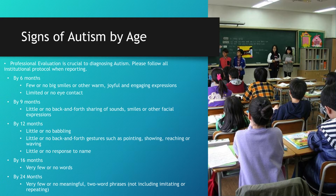By 6 months: few or no big smiles or other warm, joyful, and engaging expressions; limited or no eye contact. By 9 months: little or no back-and-forth sharing of sounds, smiles, or other facial expressions. By 12 months: little or no babbling; little or no back-and-forth gestures such as pointing, showing, reaching, or waving; little or no response to name.